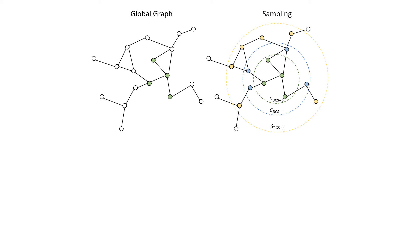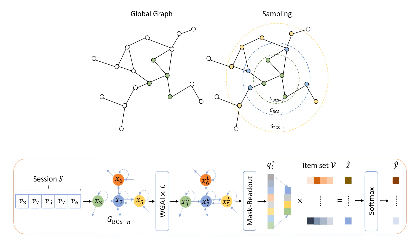The broad connected session graph is also called a BCS graph. After obtaining the BCS graph as the input, we propose two graph neural network modules: weighted graph attention layer and mask readout function. These two modules process the BCS graph and output the recommendation result.